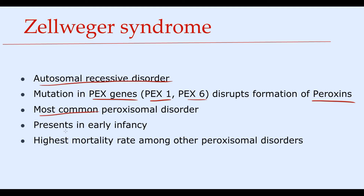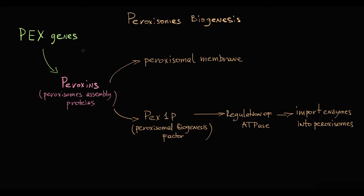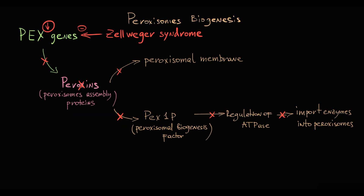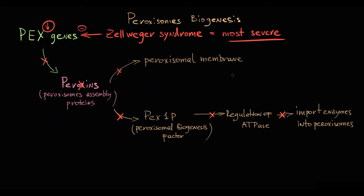There are three disorders related to peroxisomal dysfunction. The first and most severe is Zellweger syndrome — an autosomal recessive disorder caused by mutation in PEX genes, most commonly PEX1 and PEX6. This mutation disrupts formation of peroxins, causing severe disruption of peroxisomal biogenesis. It is the most common peroxisomal disorder, presents in early infancy, and has the highest mortality rate among peroxisomal disorders. If a PEX gene mutation occurs, it disrupts peroxisomal membrane formation and transportation of enzymes into peroxisomes, leaving peroxisomes completely dysfunctional.